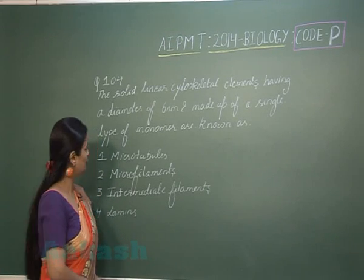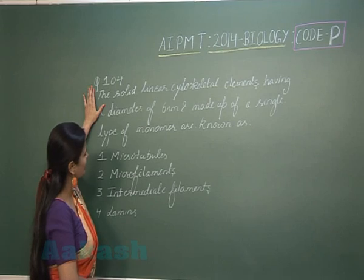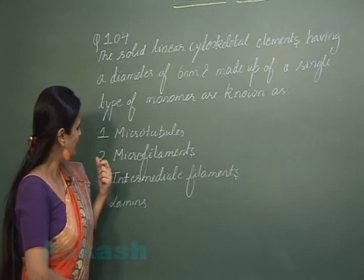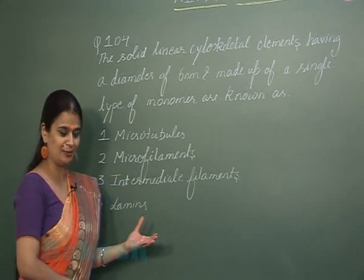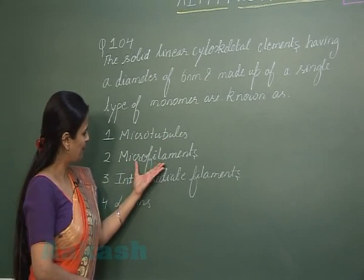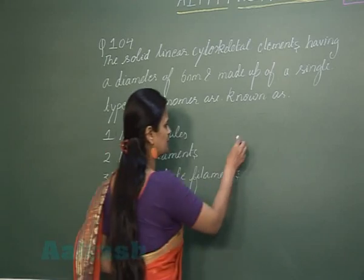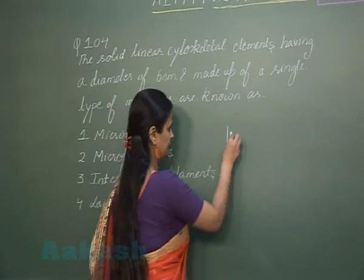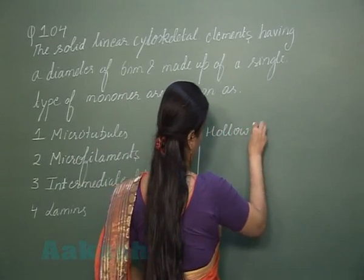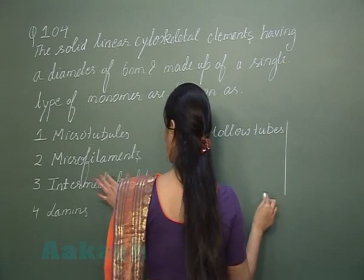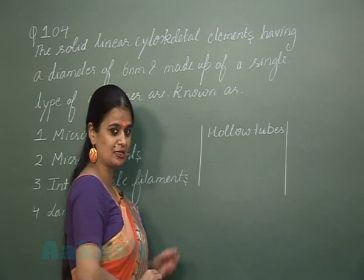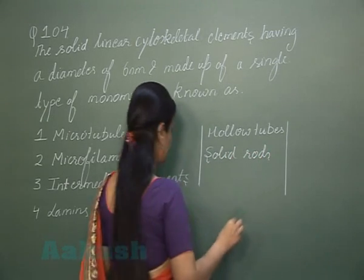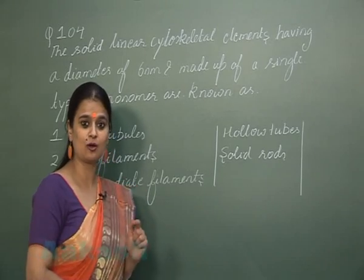Question number 104 asks which of the following represents the solid cytoskeleton component whose diameter is 6 nanometers. The cytoskeleton is composed of three main components: microtubules, microfilaments, and intermediate filaments. Comparing these three — microtubules are hollow tubes, microfilaments are solid rods, and intermediate filaments are hollow filaments.